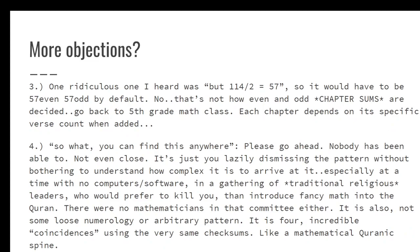There are more objections but these are pretty low IQ ones. So we have the 114 divided by 2 equals 57, basically people that don't know how even and odd checksums work. Another objection would be you can find this anywhere. So I would respond, go ahead. I haven't been able to, nobody I have shared this with has been able to find it anywhere.